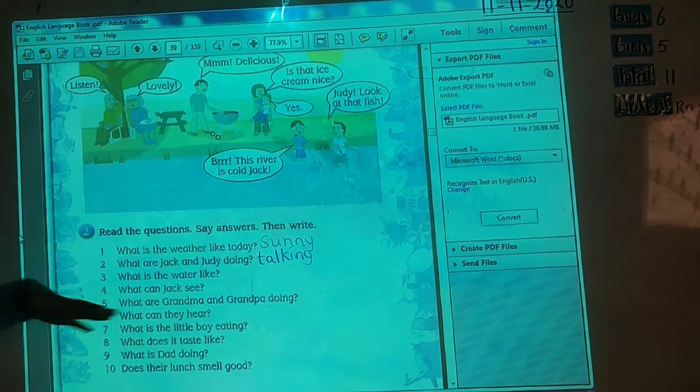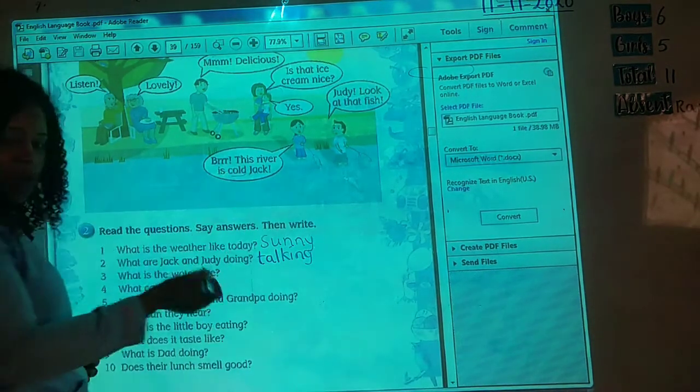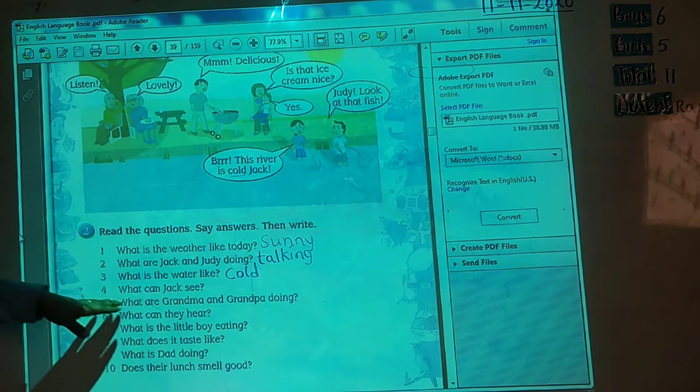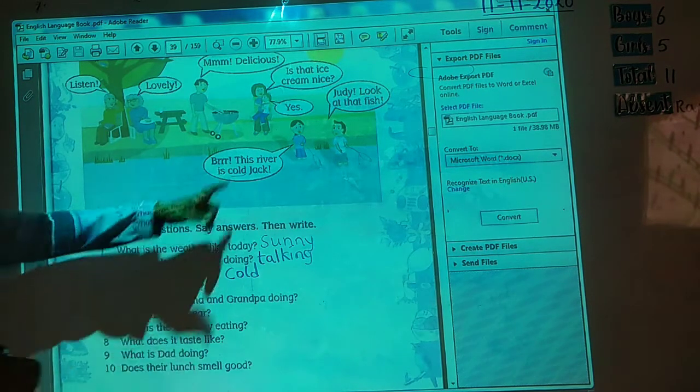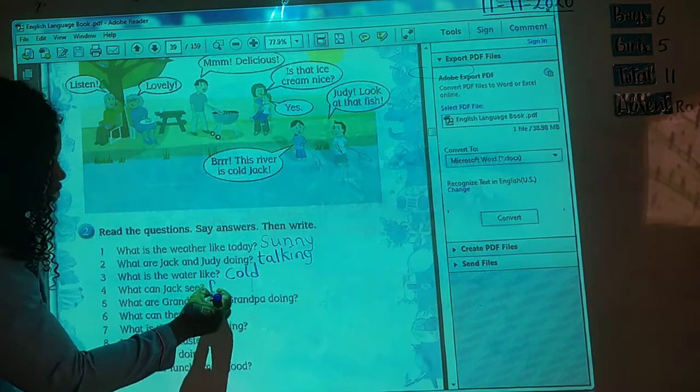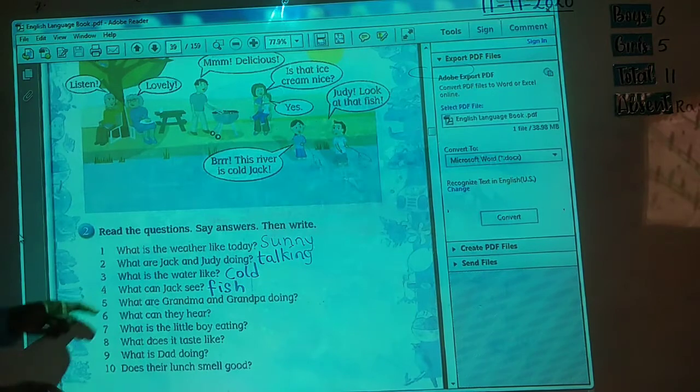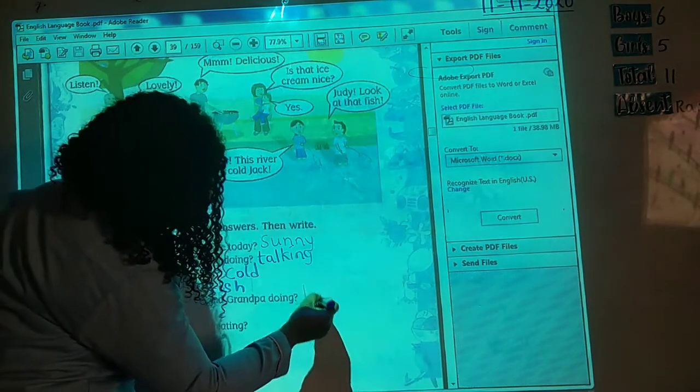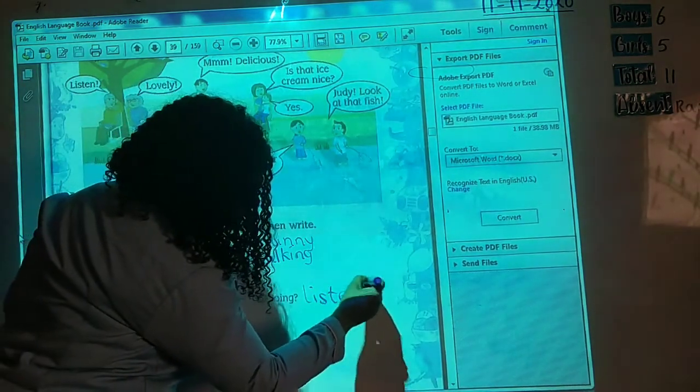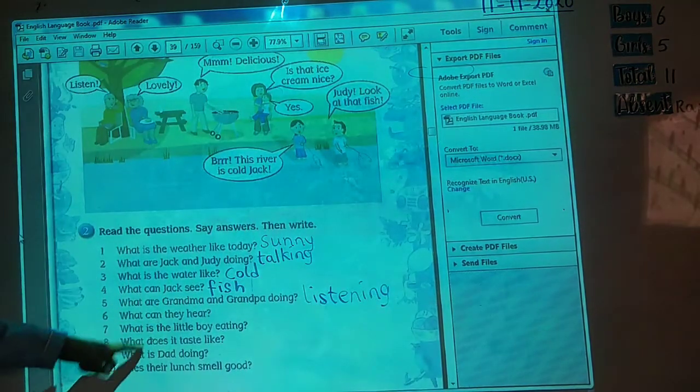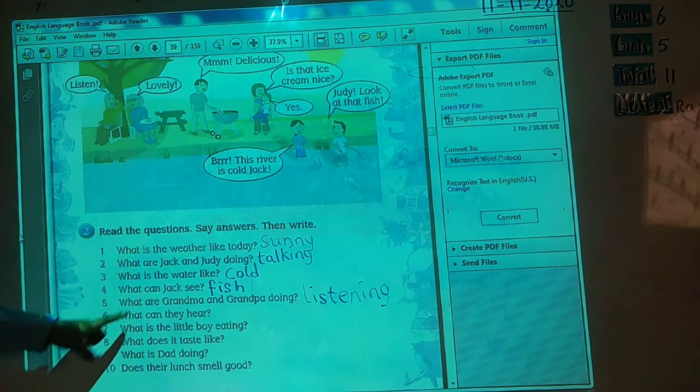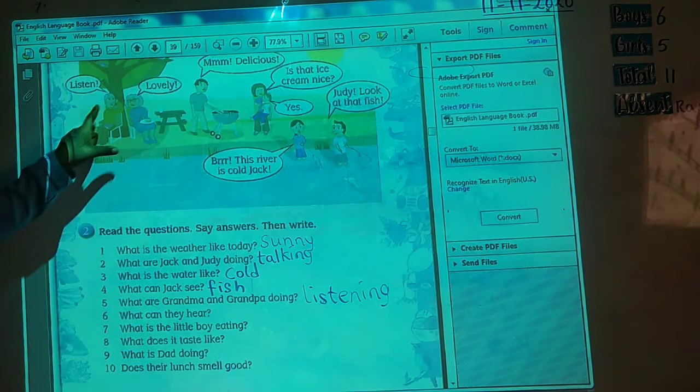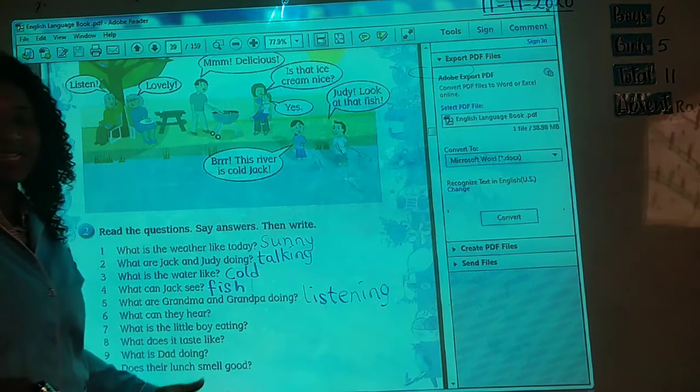Judy, look at the fish. This river is very cold. So we say they are talking. Now, what is the water like? They say the water is cold. What can Jack see? Fish. So Jack can see the fish. What are Grandpa and Grandma doing? They are listening. Then I want you to do the remaining yourself. This is what we have done so far. I want you to complete this one.